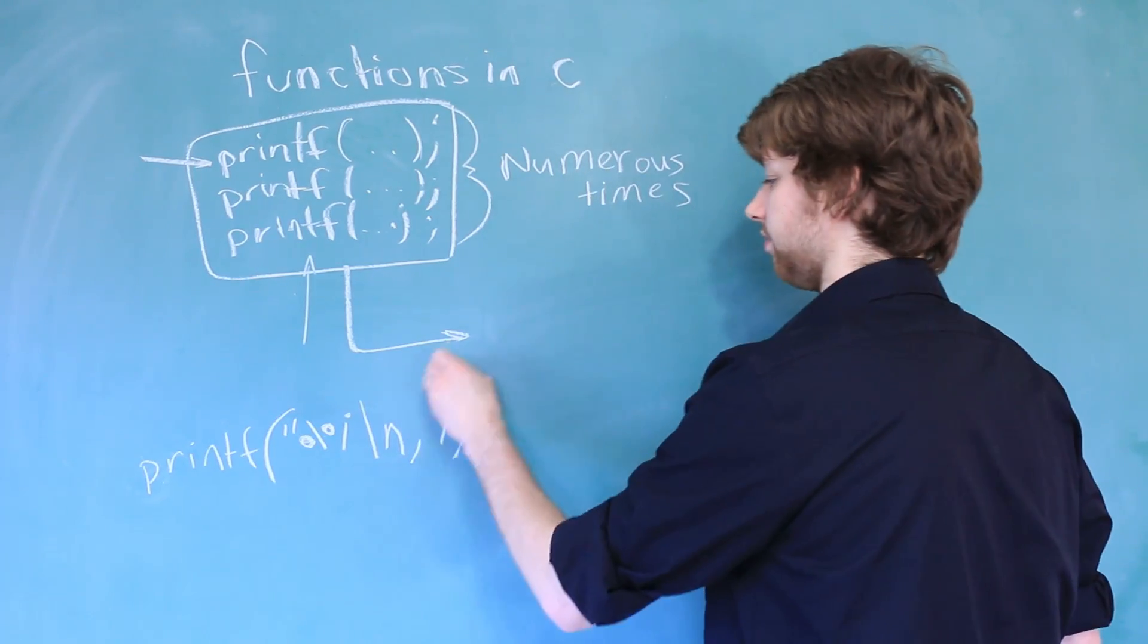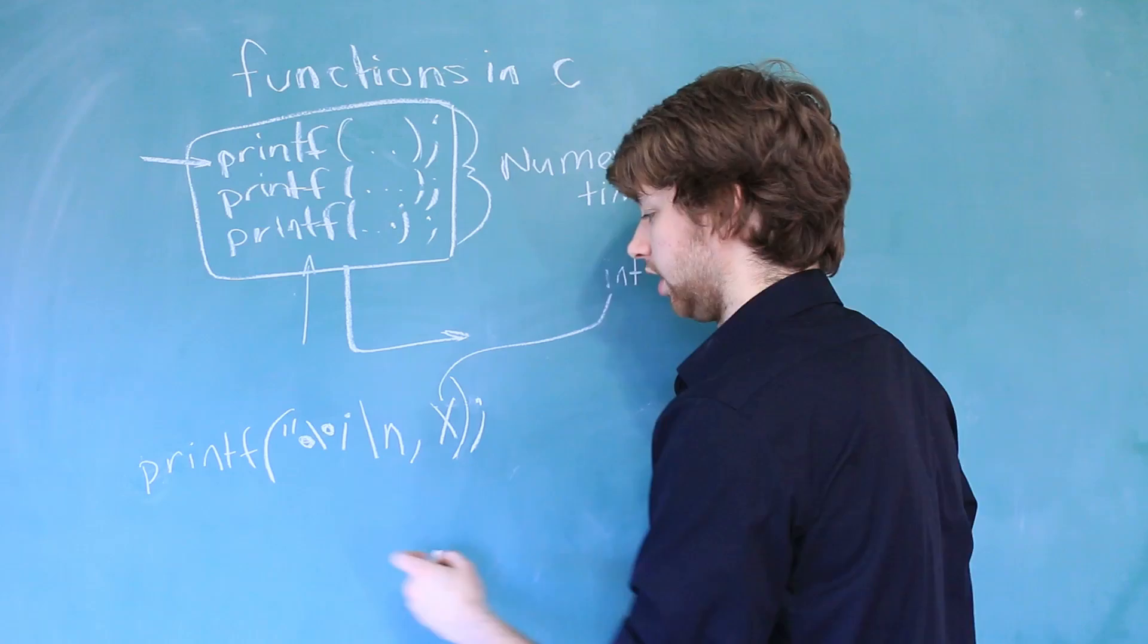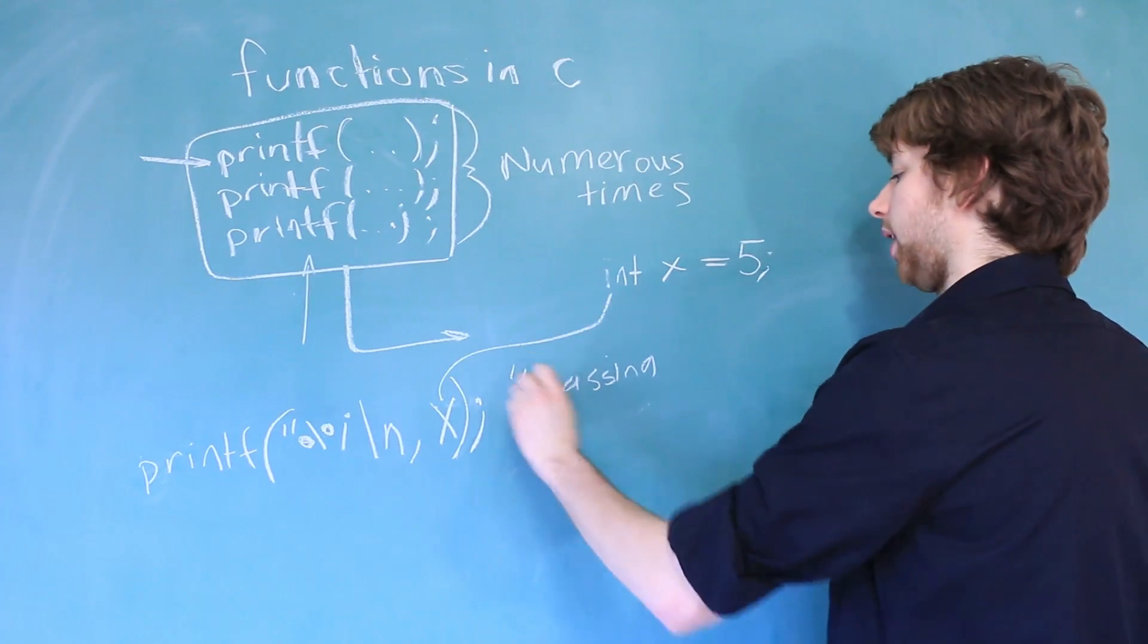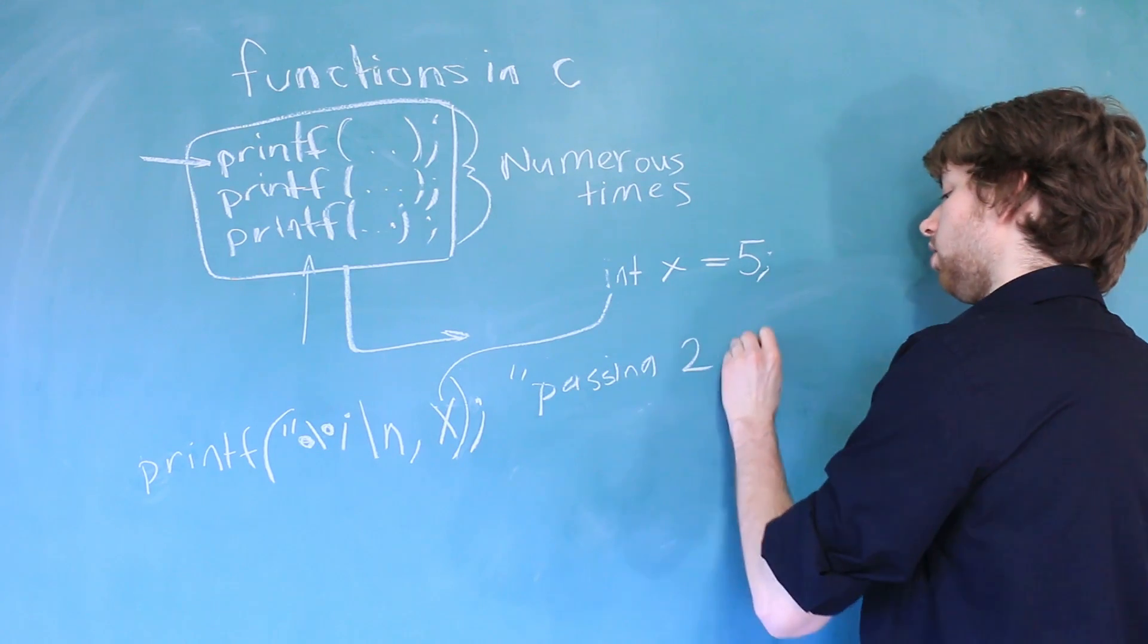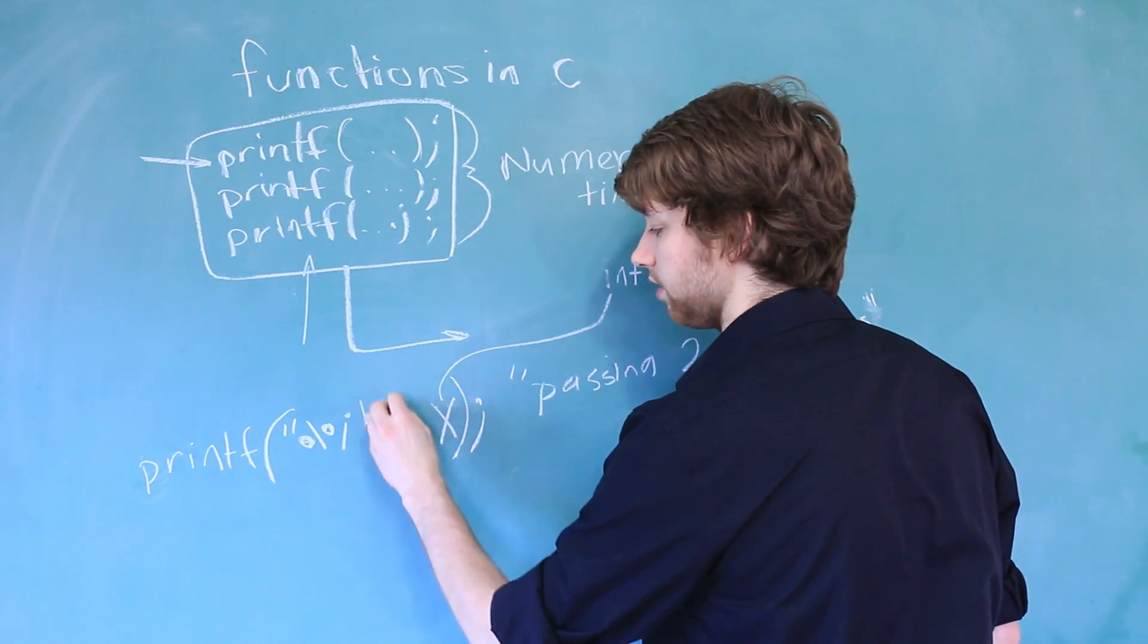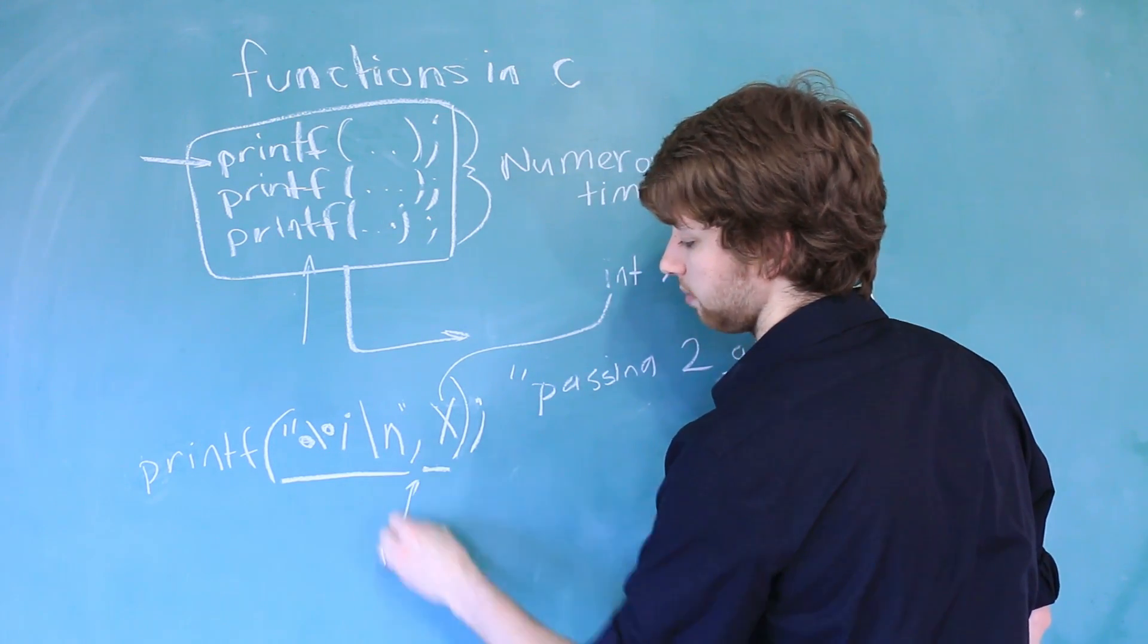Where x is the name of a variable that stores some value. The action of putting data here is called passing. So if you had to put it into a sentence, you would say we are passing two arguments. The arguments in this case, the first one would be this string here. The second one would be x. And they're separated by a comma.